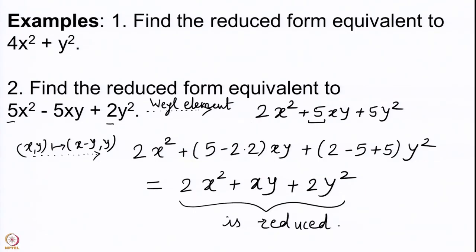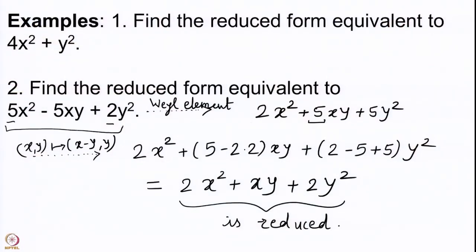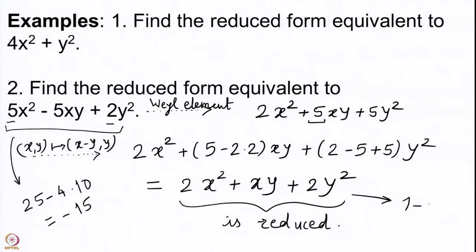We can check by computing discriminants. For 5x² − 5xy + 2y², the discriminant is b² − 4ac = 25 − 4(5)(2) = 25 − 40 = −15. For 2x² + xy + 2y², the discriminant is 1 − 4(2)(2) = 1 − 16 = −15. The discriminants match, confirming our calculations are likely correct. Thus we have computed reduced forms for the two positive definite forms we started with.